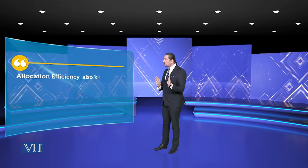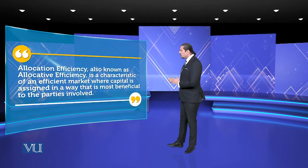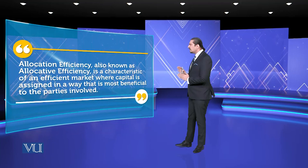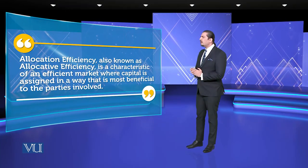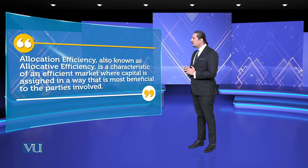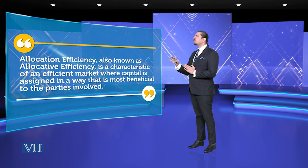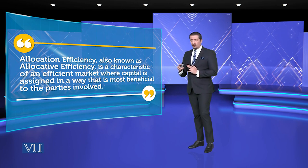Allocative efficiency — also known as allocative efficiency — is a characteristic of an efficient market where capital is assigned in a way that is most beneficial to the parties involved.